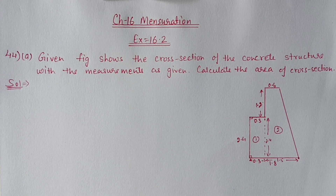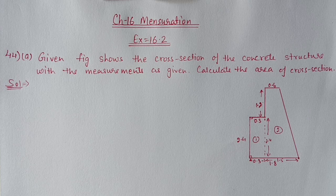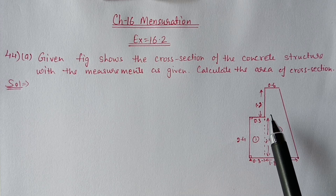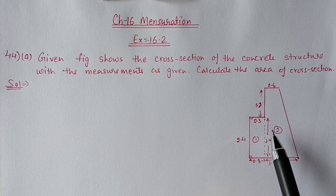Hello students, we are doing chapter number 16 Mensuration, Exercise 16.2. In today's video we will start from question number 44 part a. The given figure shows the cross section of a concrete structure with measurements as given. Calculate the area of the cross section. This figure will be divided into two parts.